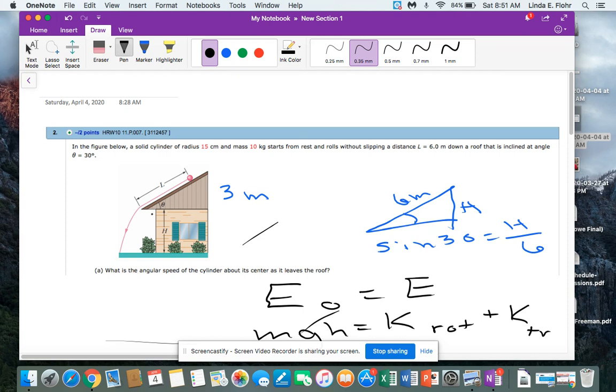In this problem you've got a ball rolling down a roof and then it gets to the end of the roof and it goes flying in the air. Hopefully right away you recognize that this top part is going to be a conservation of energy problem, and the bottom part is going to be 2D kinematics.